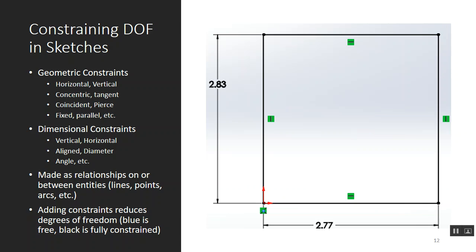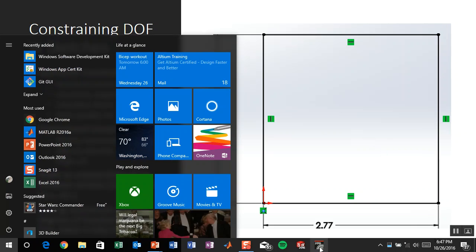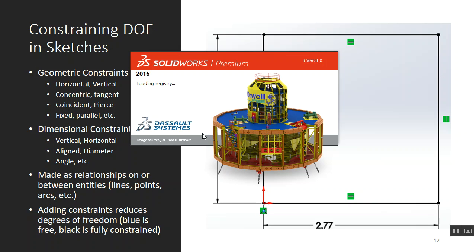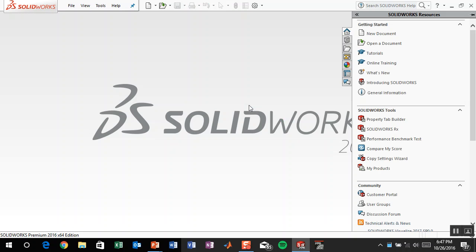We can constrain the sketch using geometric or dimensional constraints. We locked one point to the origin, eliminating two degrees of freedom (x and y). Then we said this needs to be vertical, this horizontal, this vertical, this horizontal — that's constraints three through six — and then two dimensional constraints for seven and eight. Now it's a fully defined sketch. In SOLIDWORKS the sketch is blue when underdefined and black when fully defined, so you run around adding constraints until it goes all black.